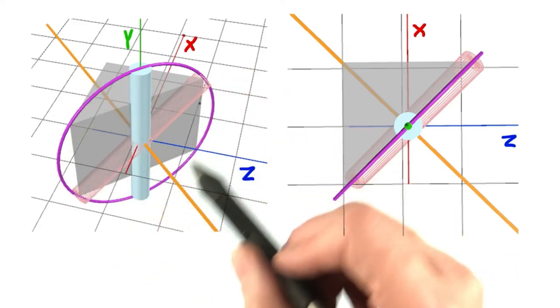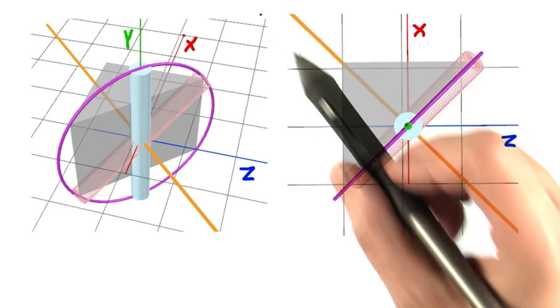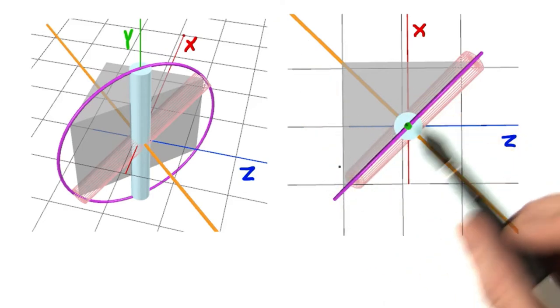We can also see that the axis through this circle is going to point in this direction or the opposite direction in order to be perpendicular to the slice.